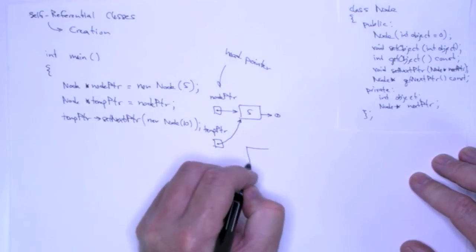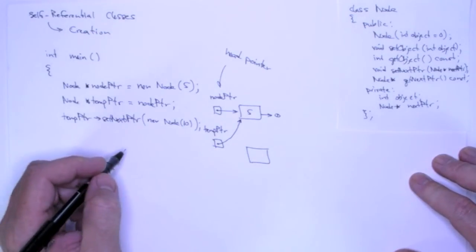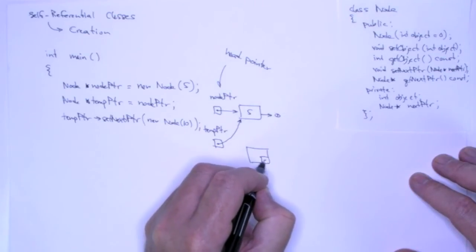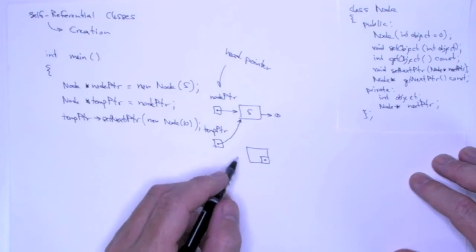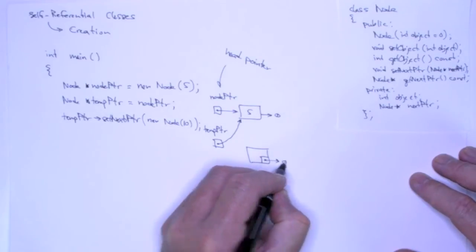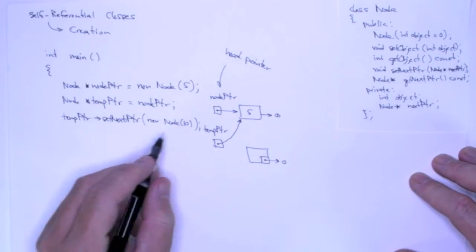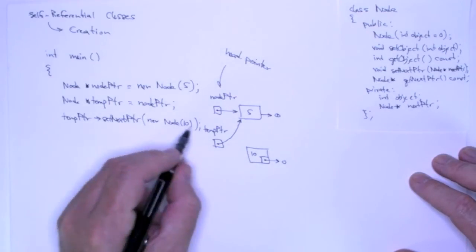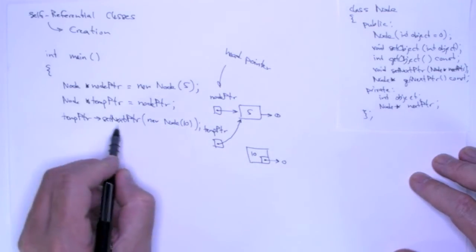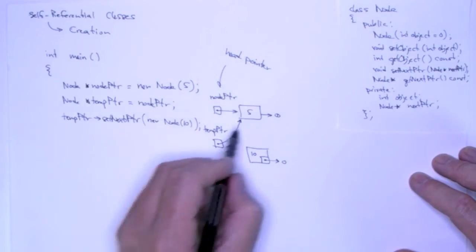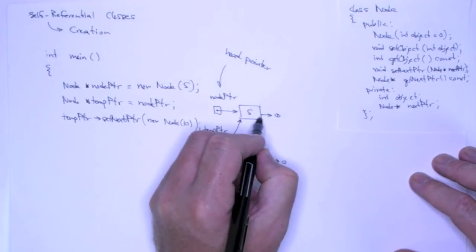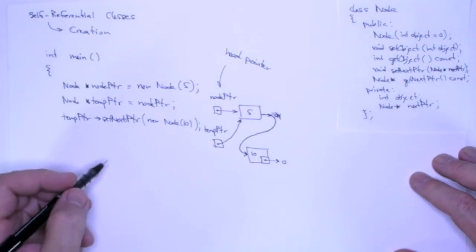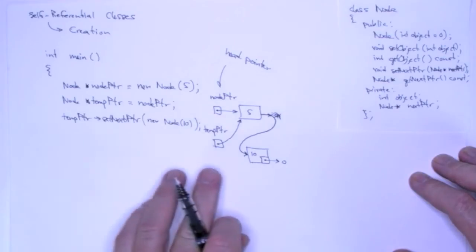So, new is going to go out, allocate memory for a node object, which includes an integer and a pointer. Then the constructor is going to execute, initialize the pointer to null, and assign the private data member 10. Then new returns the address, that gets passed into the set next pointer method of this node, and we get this.